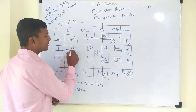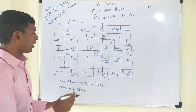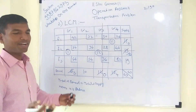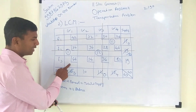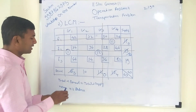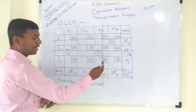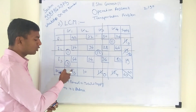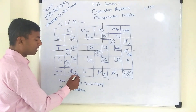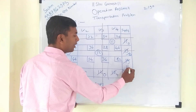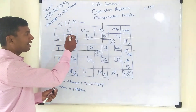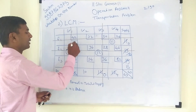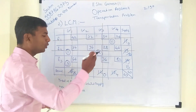Now only three cells remain: 64, 54, and 82. The smallest is 64. For this cell, demand is 5 and supply is 19 — the smallest is 5, so we allocate 5. Subtracting: demand becomes 0 and supply becomes 14 (correction: 19 − 5 = 14). Warehouse 1 has fulfilled its demand, so we cancel Warehouse 1.